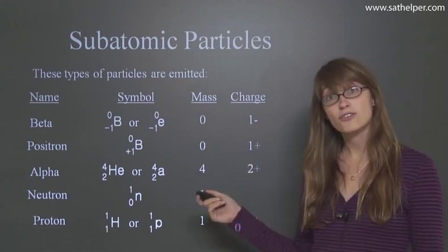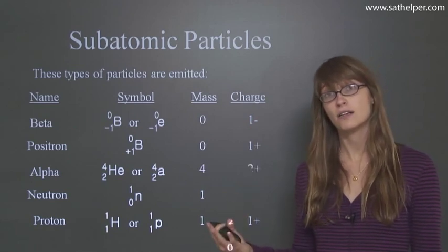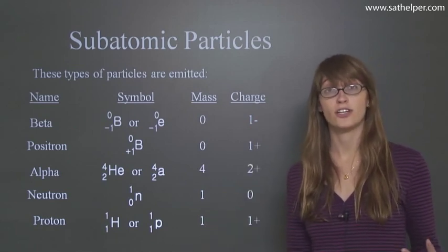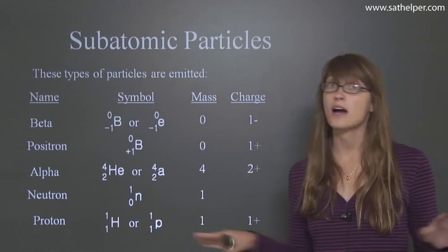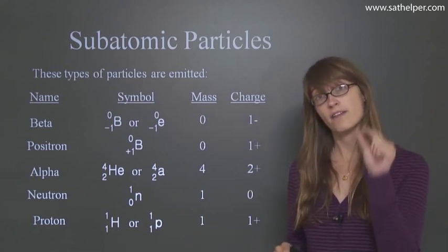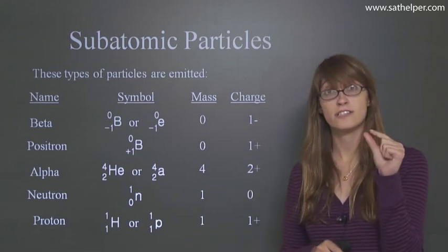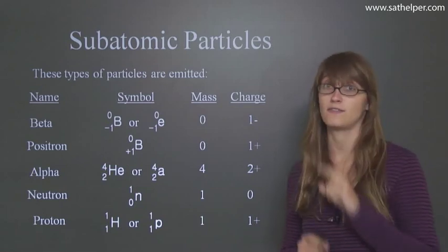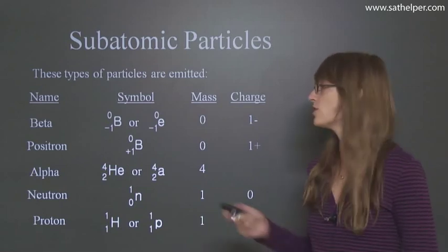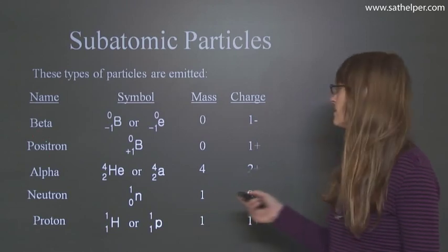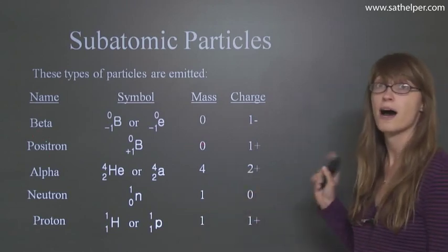Next we have a positron, which is pretty much the same thing as an electron, only it has a positive charge and not a negative charge. So we're not talking about protons here. We're talking about very small particles, particles that are just as small as electrons, but they're positively charged and not negatively charged. These are called positrons and they have a mass of zero and a charge of positive one.